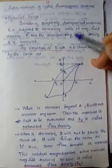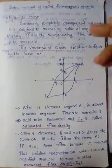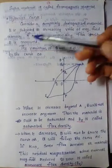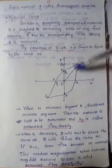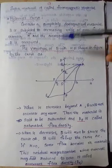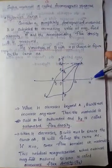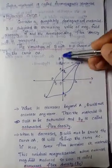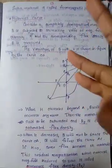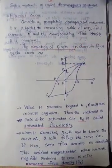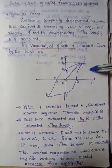What will happen automatically? The magnetic flux density is B — it is the internal magnetic flux density B. So the variation of B with respect to H is known as the hysteresis curve.